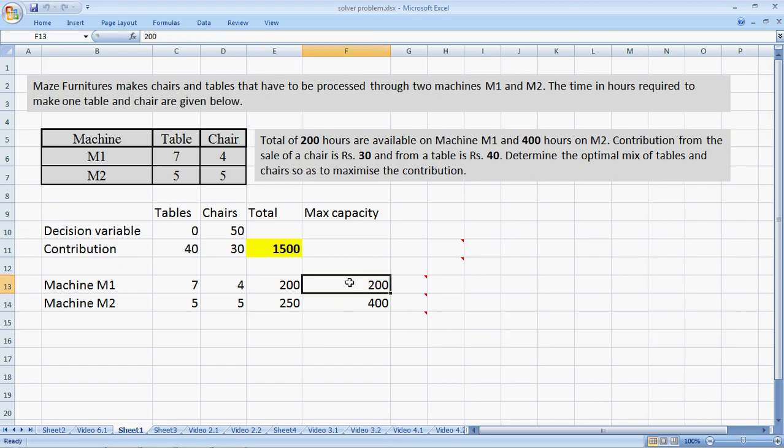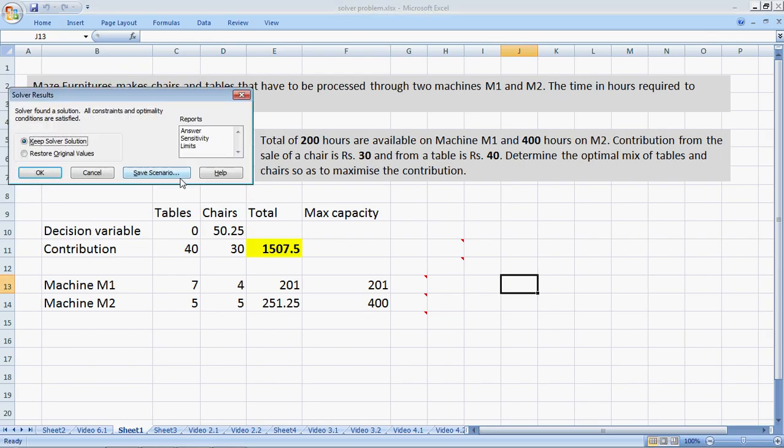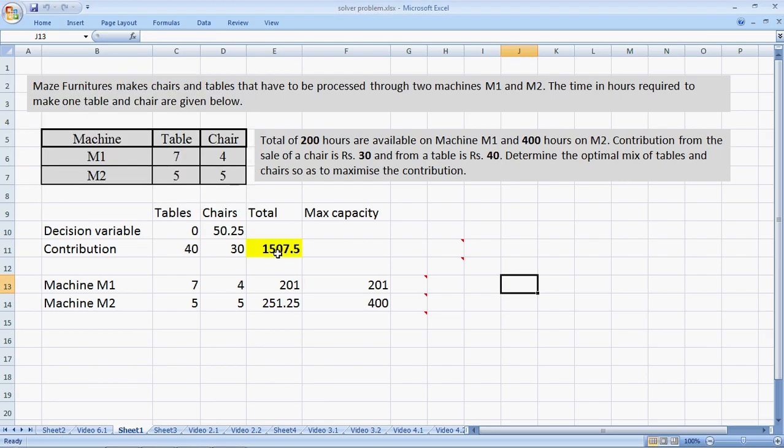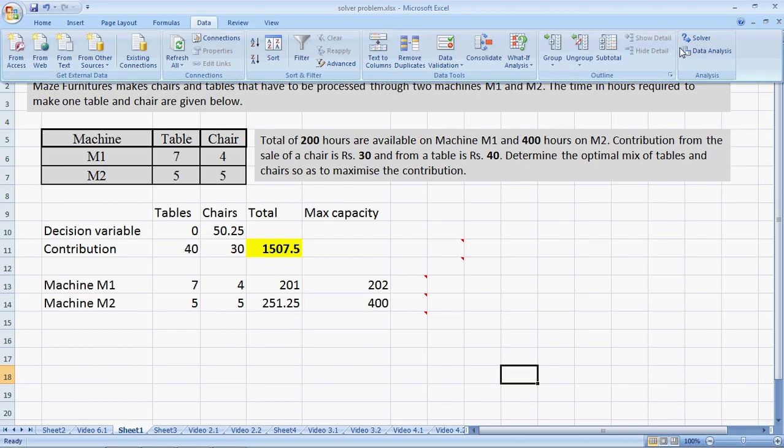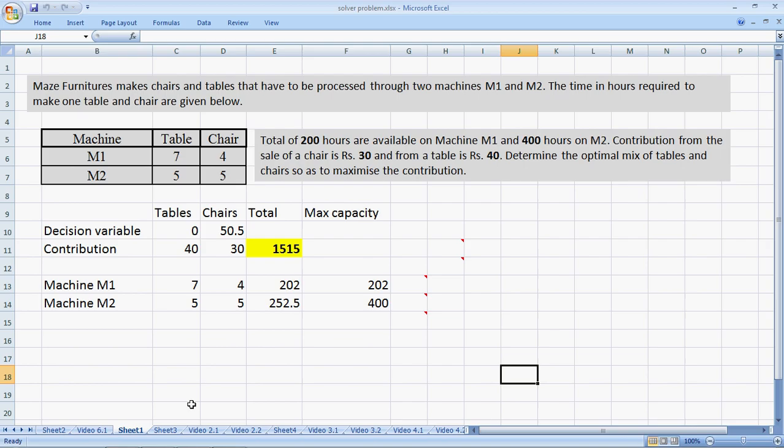Let's try it out. Let's increase the capacity of M1 from 200 to 201 units and then we go to data, solver and solve the problem. What we see is that our objective, the contribution goes up from 1500 rupees to 1507.5 rupees, an increase of 7.5 rupees. Let's try to increase it by 2 units, 202 and then we go to data, solver and solve it again. It goes up by 15 units.